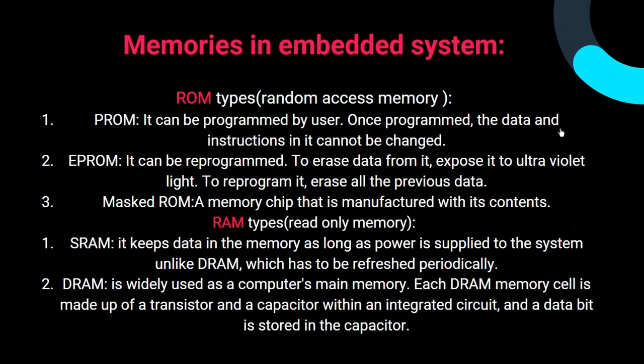Masked ROM is a memory chip manufactured with its contents already embedded. The random access memory is the main memory and consists of two types: SRAM (static random access memory), which keeps data in memory as long as power is supplied, and DRAM (dynamic random access memory), which must be refreshed periodically. Each DRAM memory cell is made up of a transistor and a capacitor, and a data bit is stored in the capacitor.